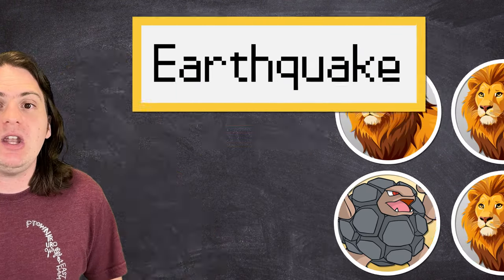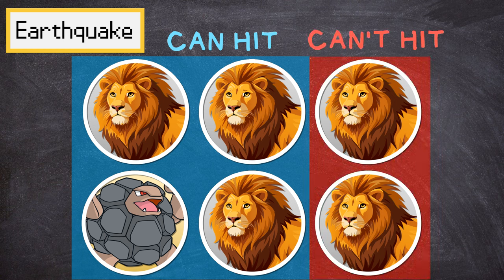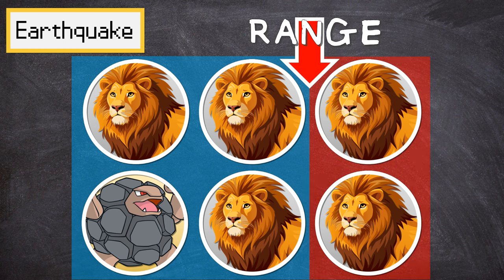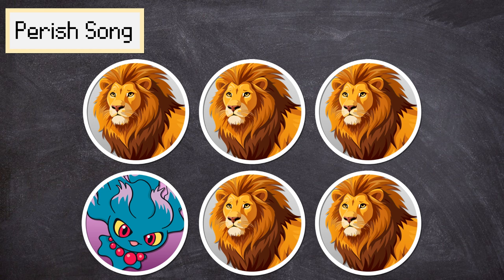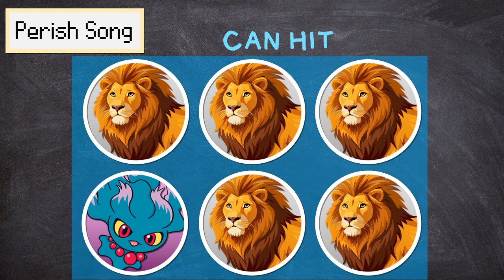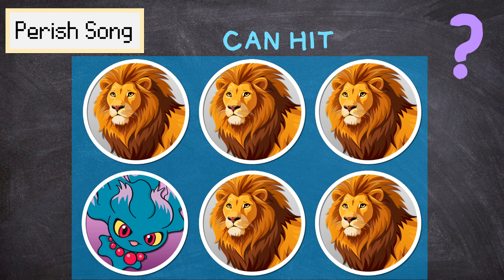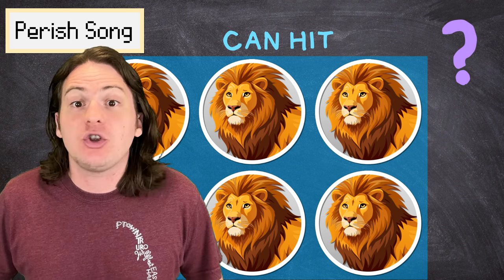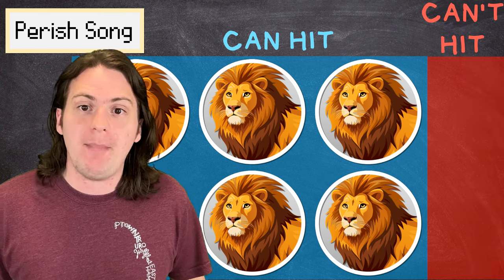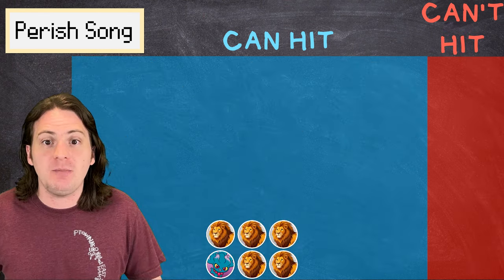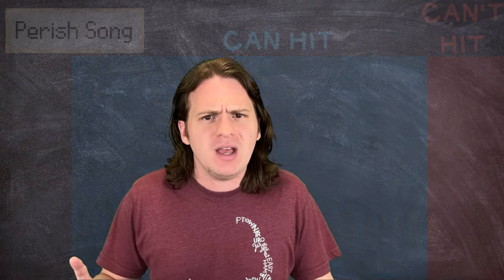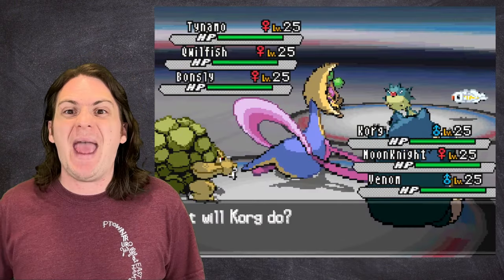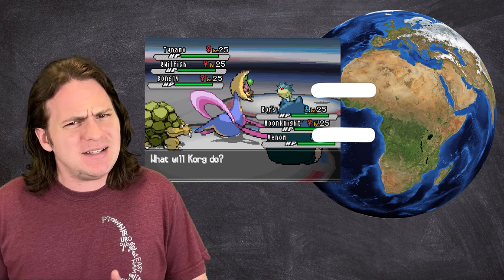The reason we were able to calculate the range for a move like Earthquake was because we knew the minimum and maximum possible values. With Perish Song, we know that at minimum, it is big enough to hit everyone on a Pokémon battlefield, but we don't know the maximum. Now, that's not to say that it doesn't have a maximum. It just means that we don't know. It could be barely large enough to cover a Pokémon battlefield, it could be 20 miles, it could be 2 million miles. However, simply saying that Perish Song can hit everyone on this field, therefore it can hit everyone on any field, isn't a valid assumption.